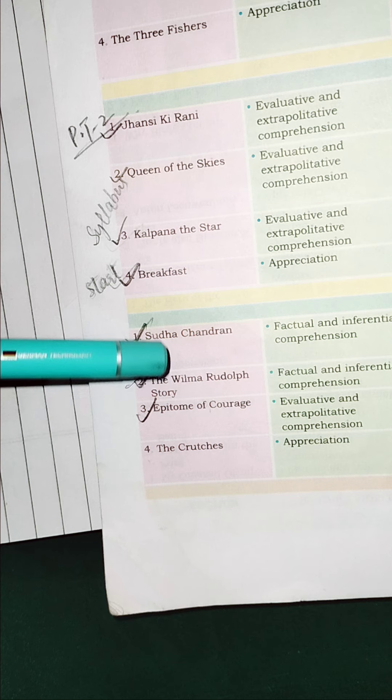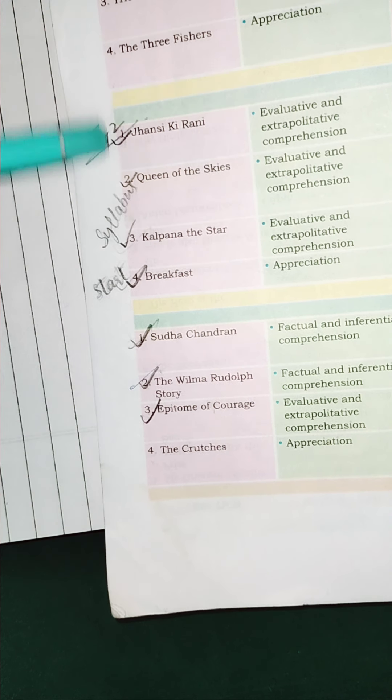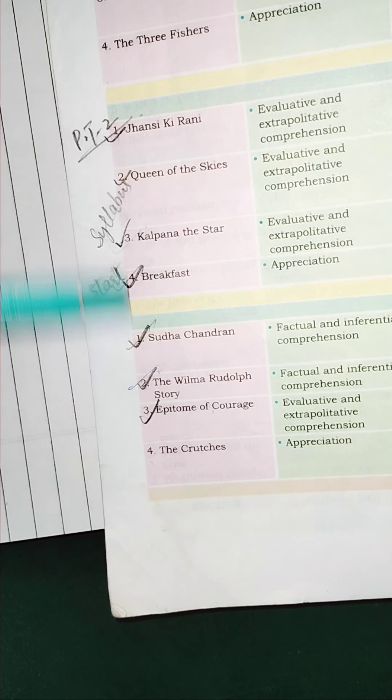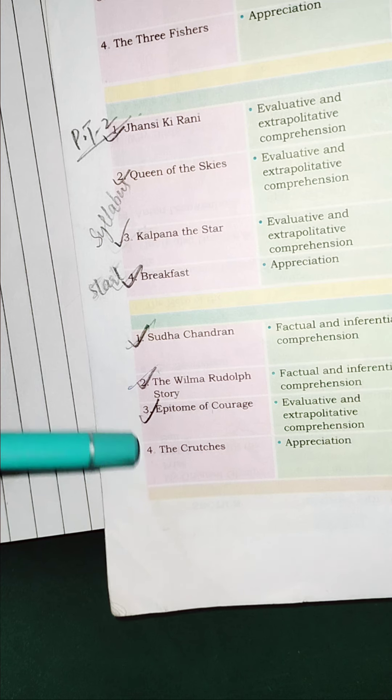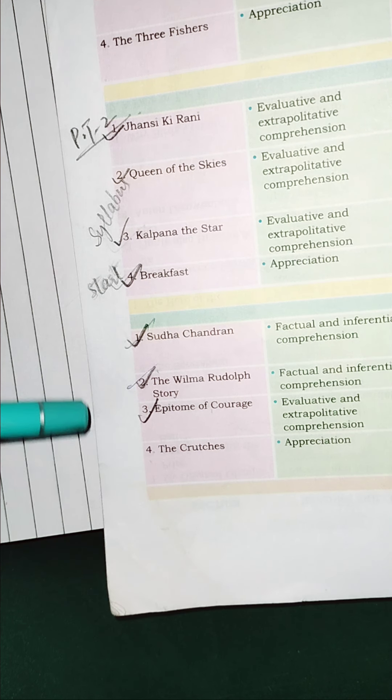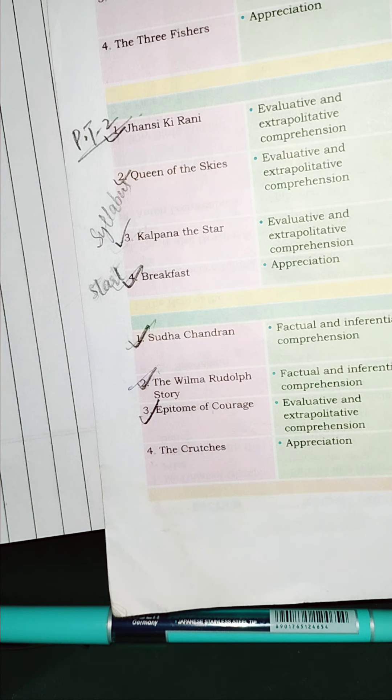So anytime we can come and check your notebook so today I am going to start with this poem the crutches so with this we'll finish our unit 3 also but this will not come in PT2 your syllabus is only this much which I have tick marked this we are doing because we have to move forward fast as we are lagging behind okay so now we are going to start with the poem.